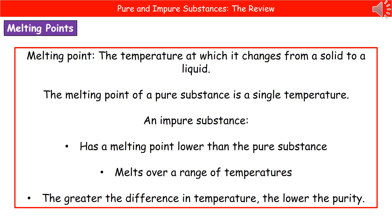However, if there are any impurities present, the melting point will be lower than that of the pure substance, and it will melt over a range of temperatures rather than at a single temperature. The greater the difference between the test sample's melting point and that of the known pure substance, the lower the purity will be.